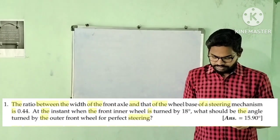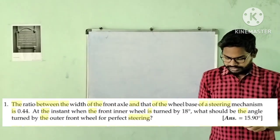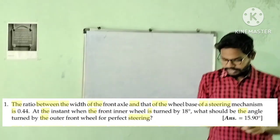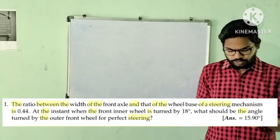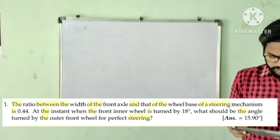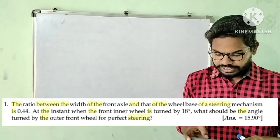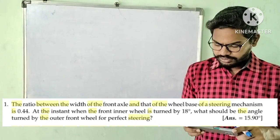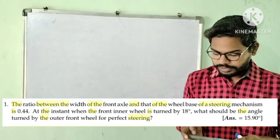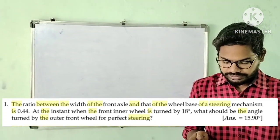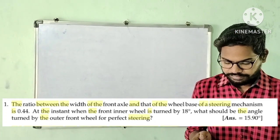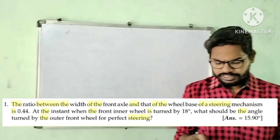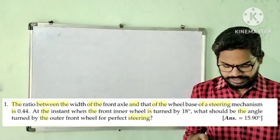The ratio between the width of the front axle and that of the wheelbase of the steering mechanism is 0.44. At the instant when the front inner wheel is turned by 80 degrees, what should be the angle turned by the outer front wheel for perfect steering or correct steering?